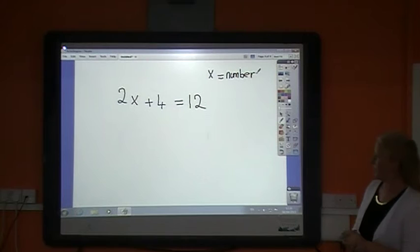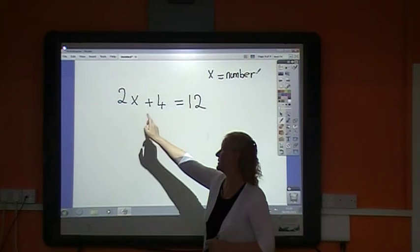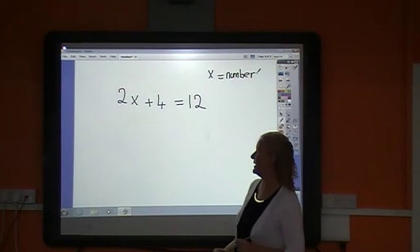So there's two things I want to get rid of here. I want to get rid of the 2 and I want to get rid of the 4. Now this actually means 2 multiplied by x plus 4 is 12. I leave the one that's multiplied by the x to the end and I get rid of the 4 first. So how do I get rid of a plus 4?